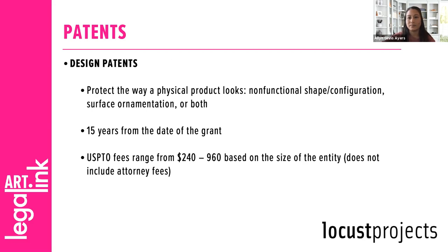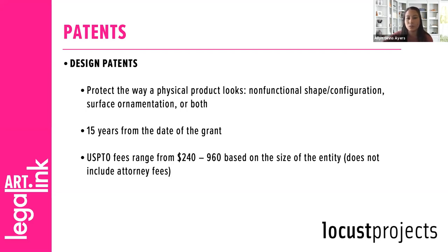Design patents protect the way that an article of manufacture — a fancy way of saying a physical product — looks. It can apply to the shape of the product, the surface ornamentation, or both. The protected design must be inseparable from the article of manufacture, so it can't cover patterns or graphics that might appear on products, although those might be covered by trademark or copyright law. Some examples are the shape of the Coca-Cola bottle, the Eames chair, or the specific tread design on tires. Protection lasts 15 years from the date of grant, and application fees range from $240 to $960, not including attorney's fees.